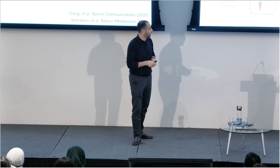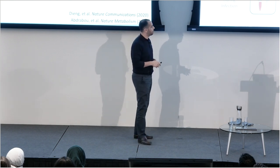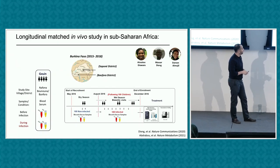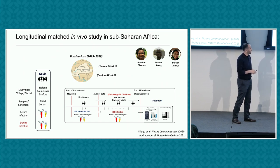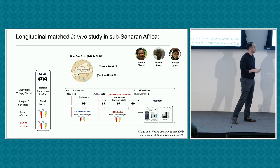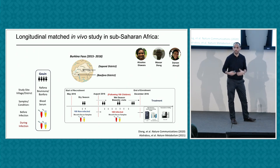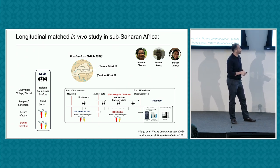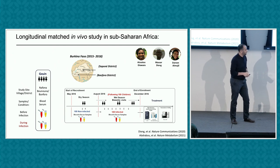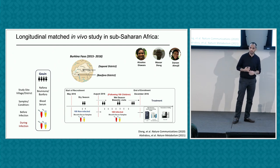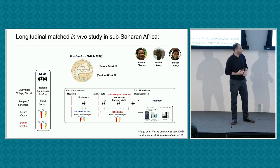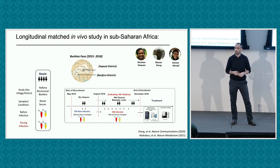We collected blood and serum samples from a hundred children during the dry season, then followed up during the wet season when malaria transmission is very high. The idea was to do high-resolution metabolomic profiling, lipidomic profiling, and transcriptomic profiling. This is a massive study because it's matched — we're looking at the same individuals before they were infected and during the infection. We're not doing a cross-sectional study, and we have three different omics datasets.